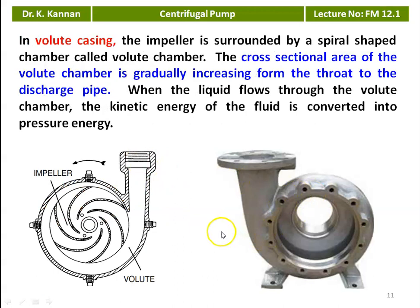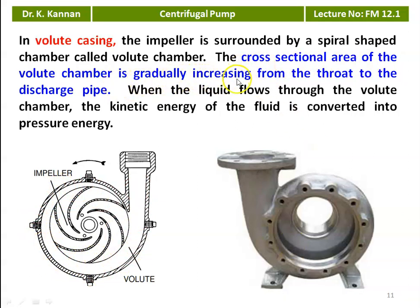In the volute casing, the impeller is surrounded by a spiral-shaped chamber called the volute chamber. The cross-sectional area of the volute chamber gradually increases from the throat to the discharge pipe. When the liquid flows through the volute chamber, the kinetic energy of the fluid is converted into pressure energy.